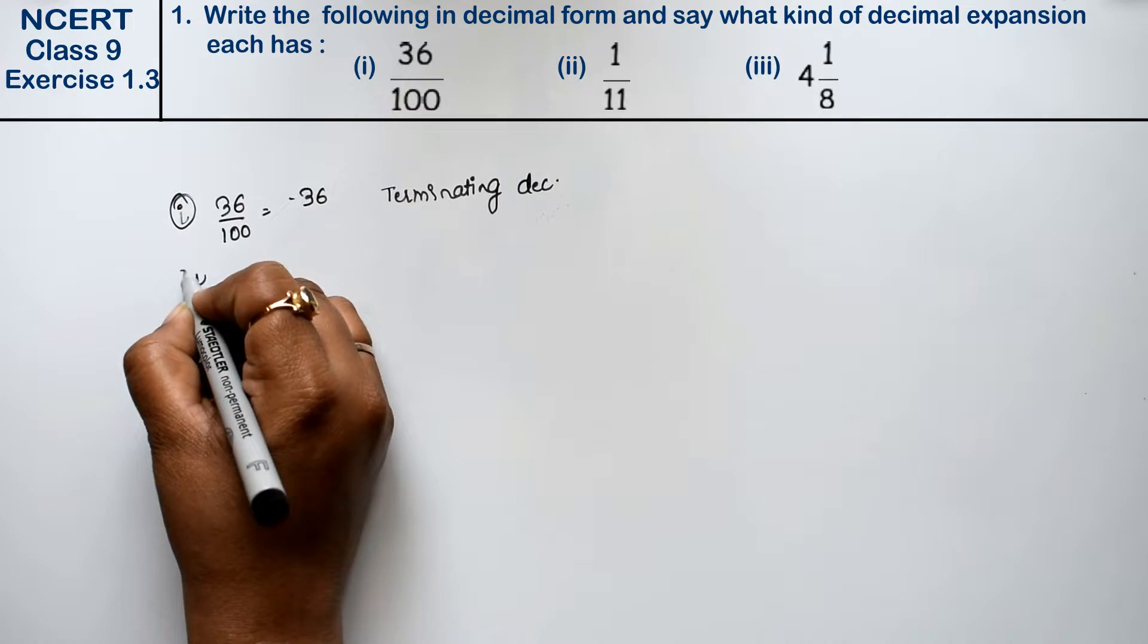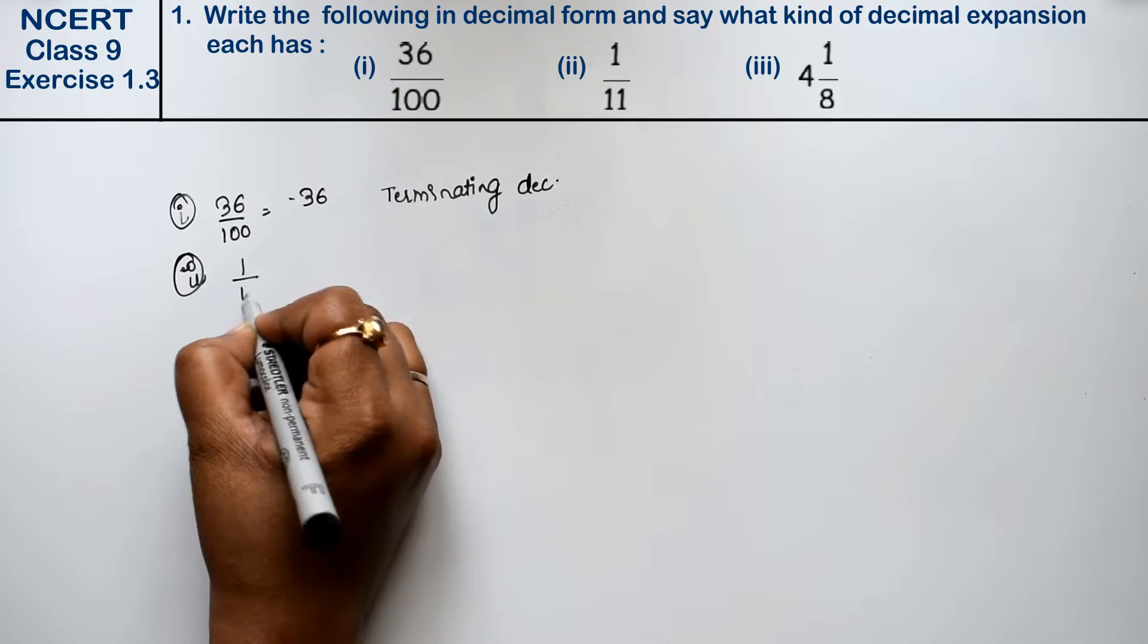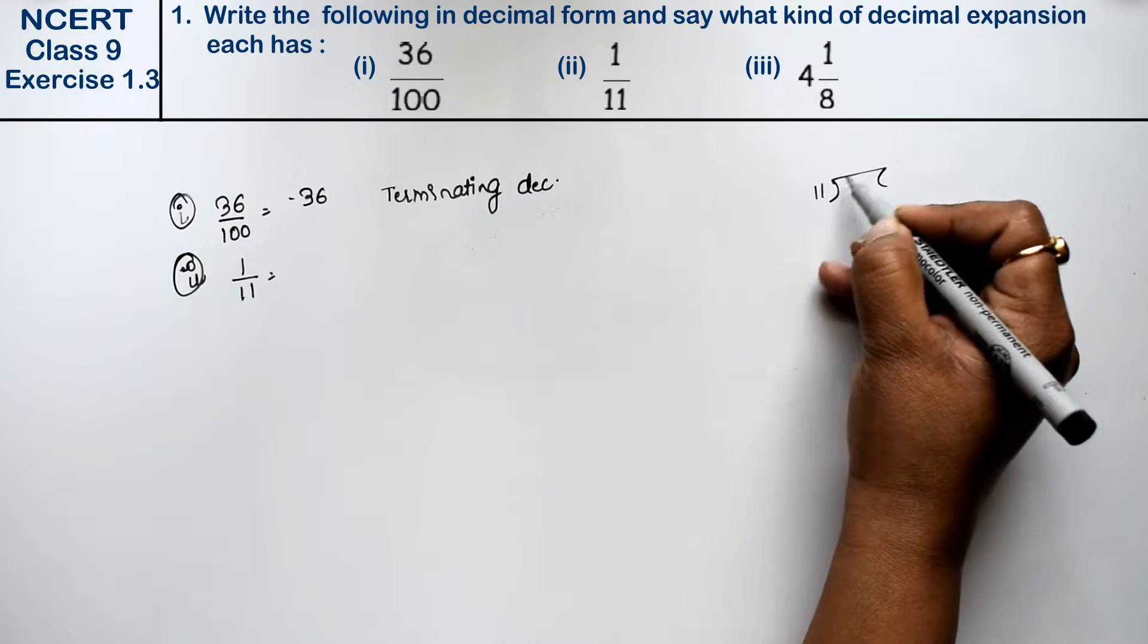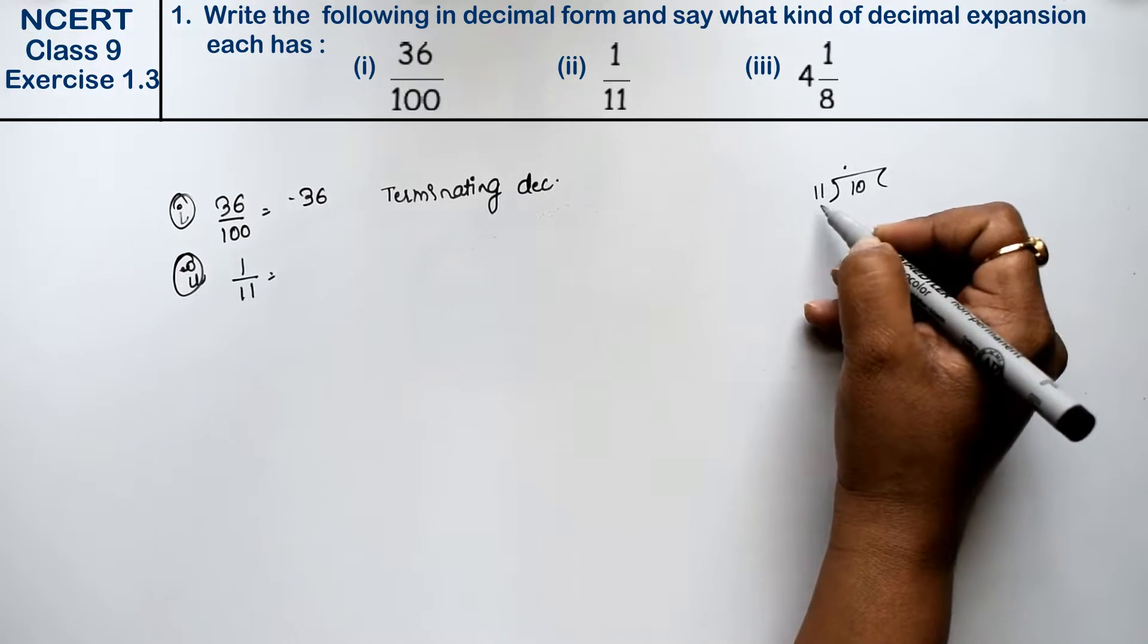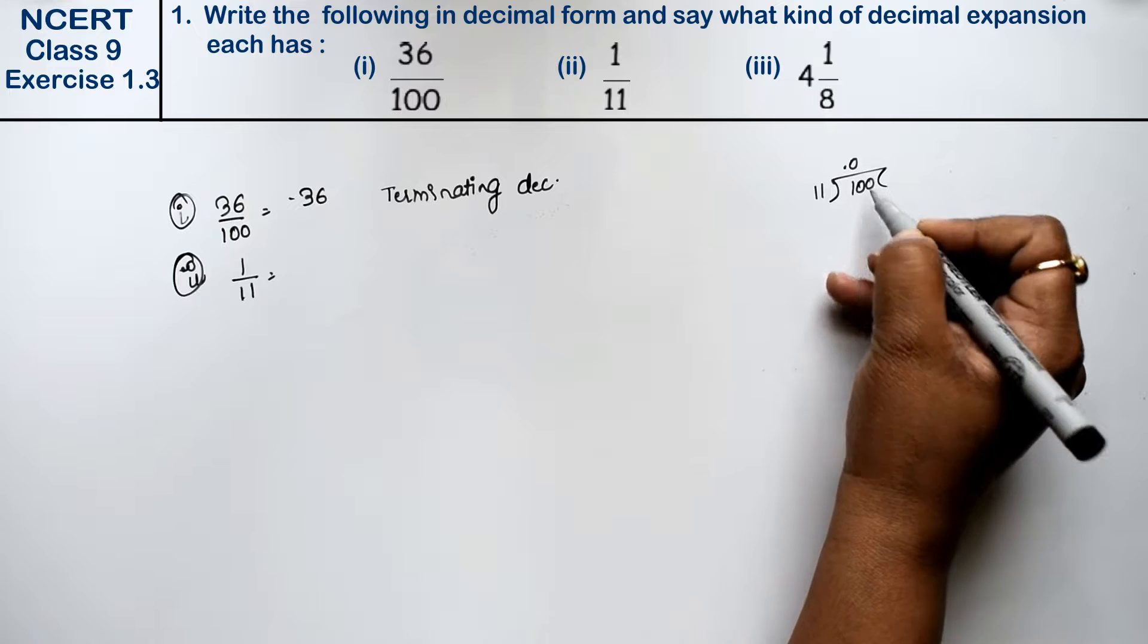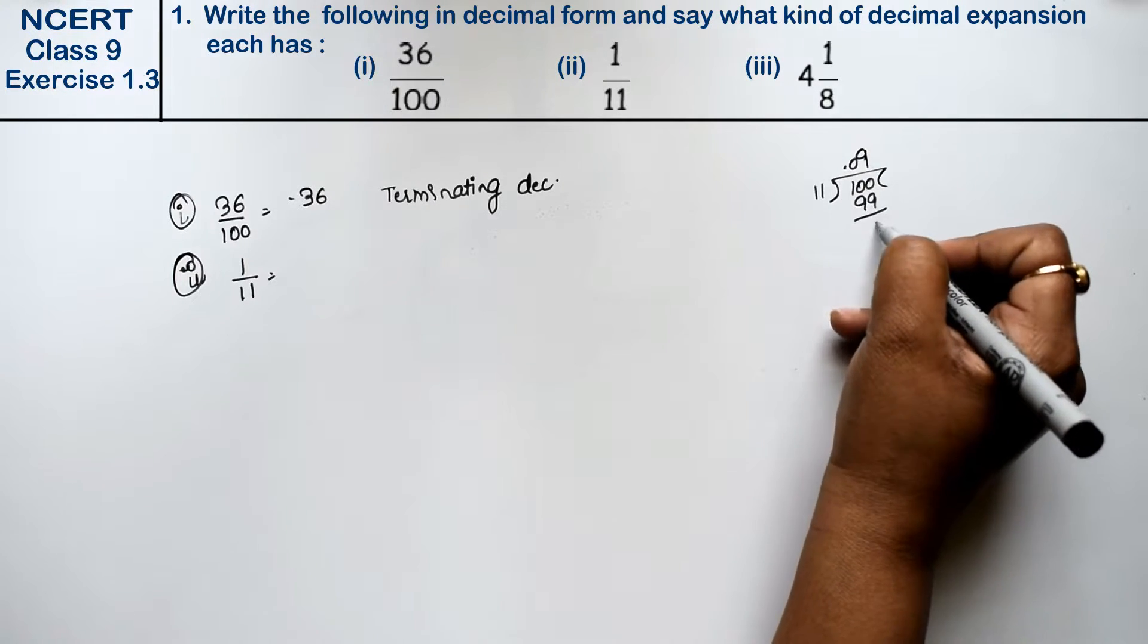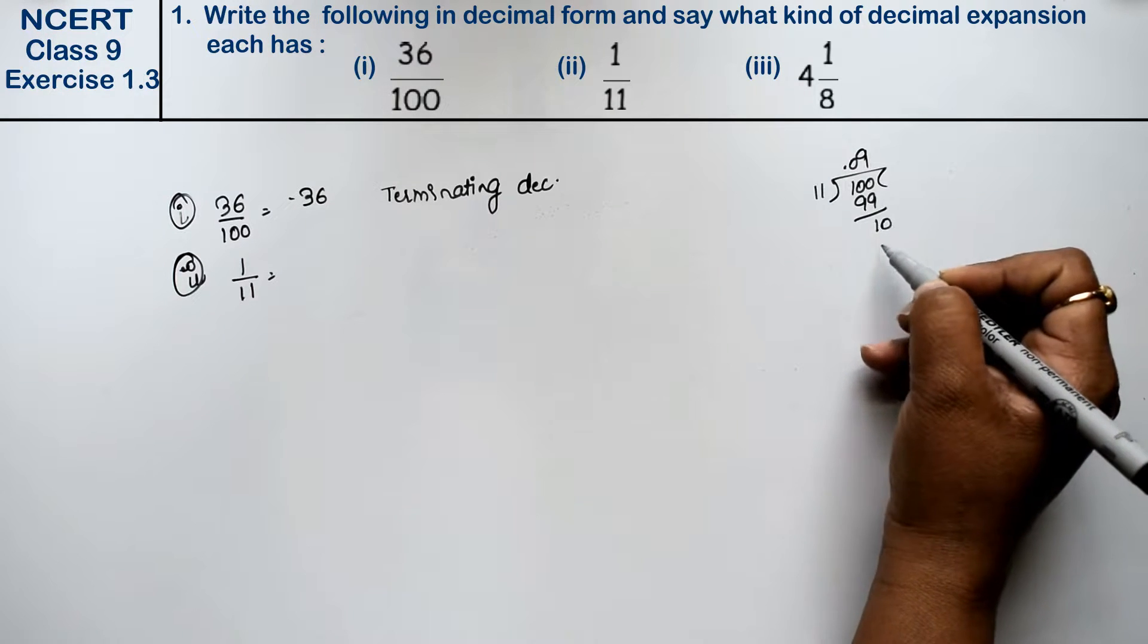Let's do second part. Second part is 1 upon 11. Friends, if we divide 1 from 11. Point 0 is 0. It's not possible. It's another 0. Right friends. So 9 is 99.